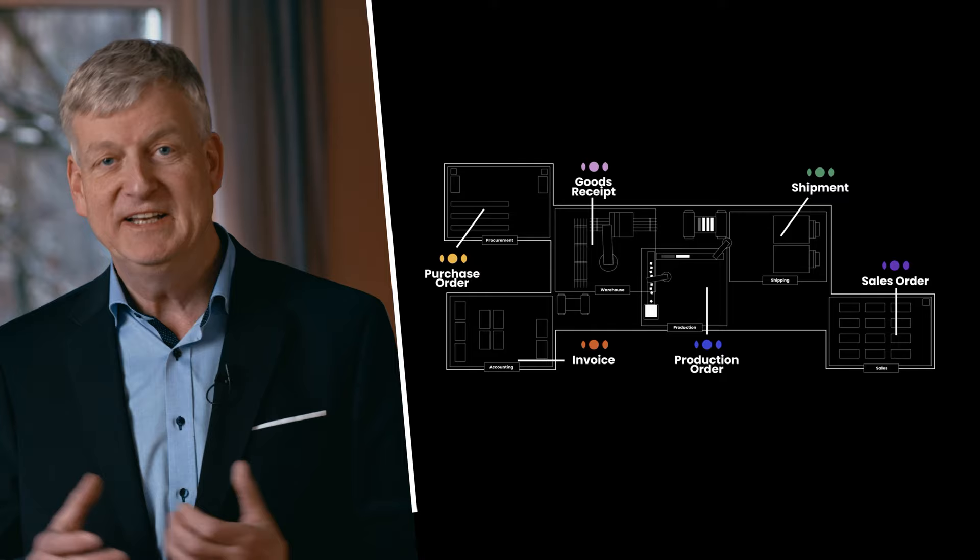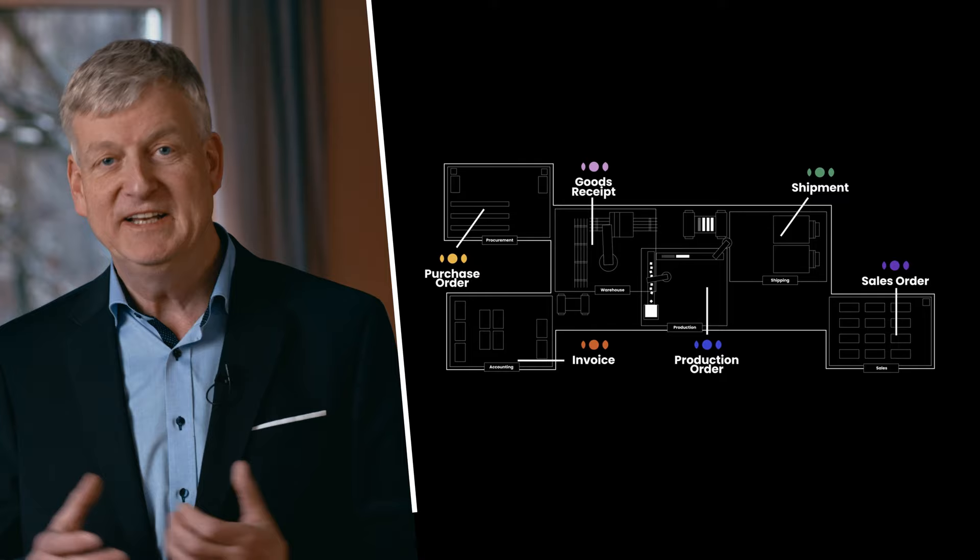And each of these departments works with different objects. For example, finance will work with invoices, production with production orders and distribution with shipments. As you all know, the relationship between these objects are rarely simple.